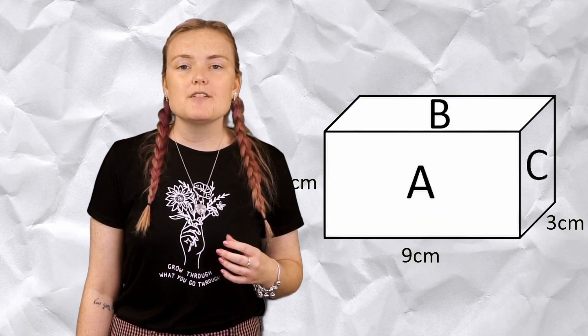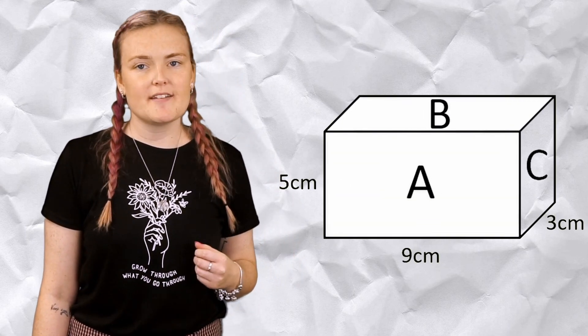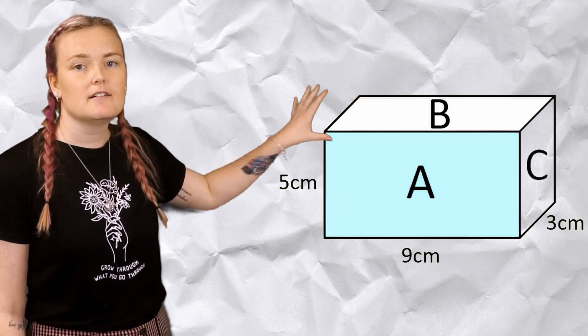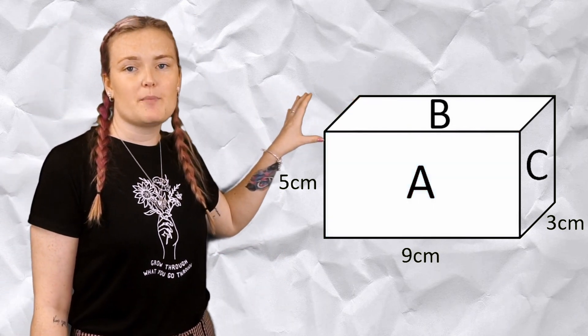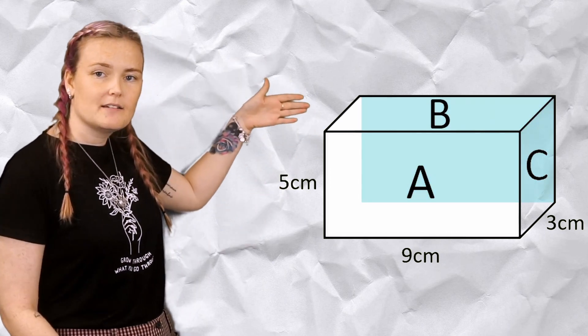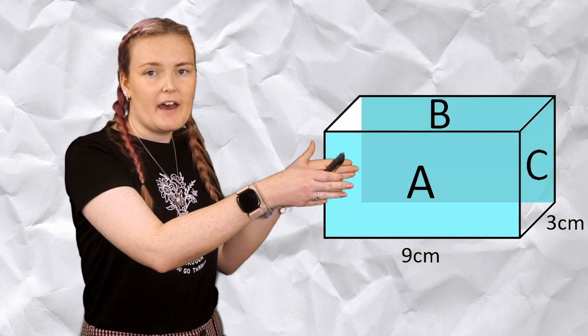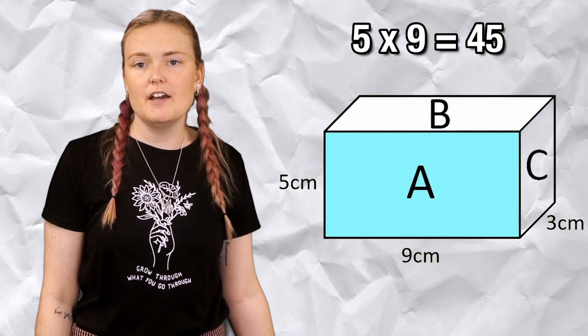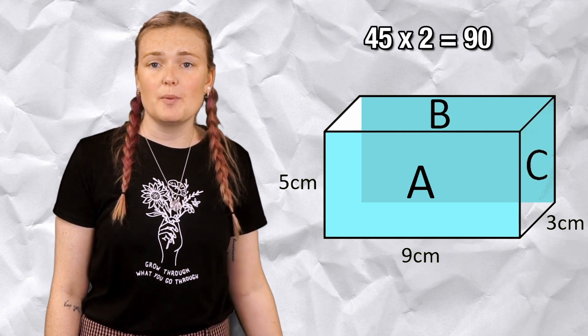Let's look at a cuboid. It's got some different faces on this one, they're not all the same. So let's divide it into what we know we've got. We've got a front face here and that is 5 by 9. I've also got that shape at the back so it matches, it's a pair. So I've got that shape twice. So if I do 5 times 9 is 45, I've got that twice so I'm going to double it, 90.